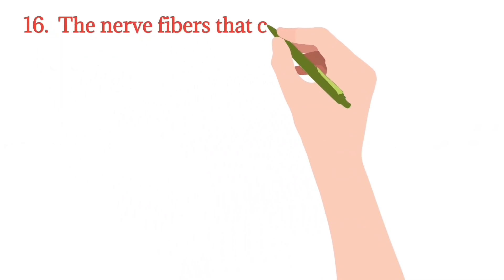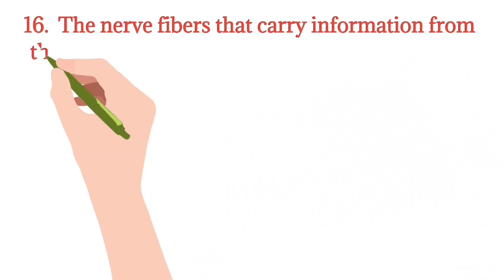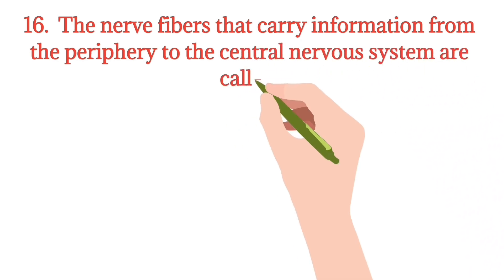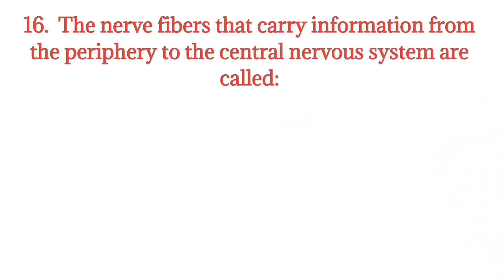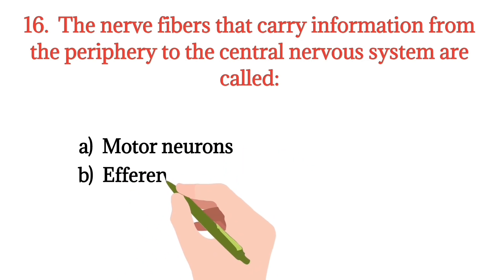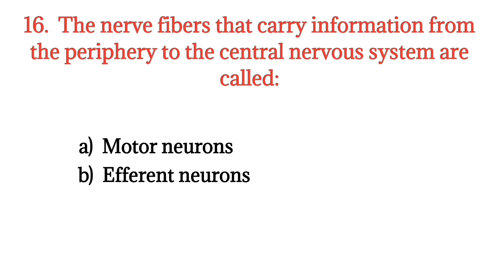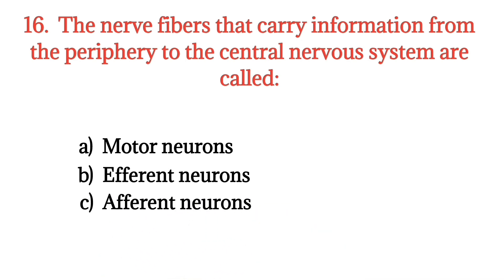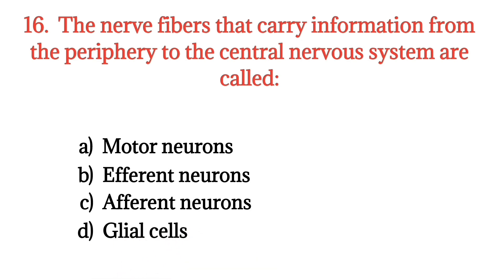MCQ number 16. The nerve fibers that carry information from the periphery to the central nervous system are called? Option A: Motor neuron. Option B: Afferent neuron. Option C: Afferent neuron. Option D: Glial cell. The right option is Option C.